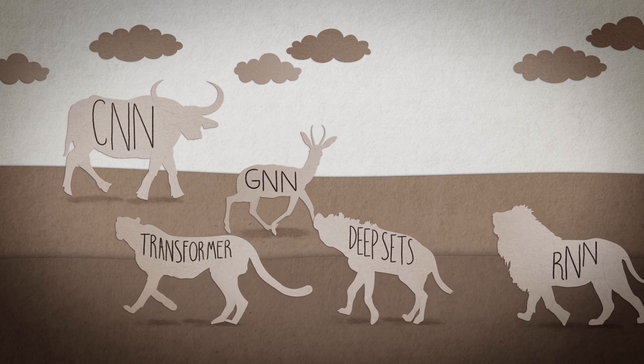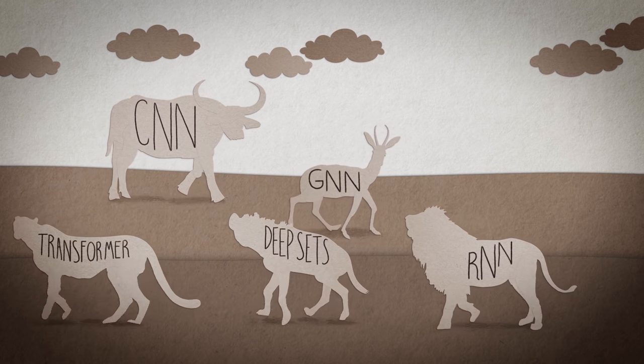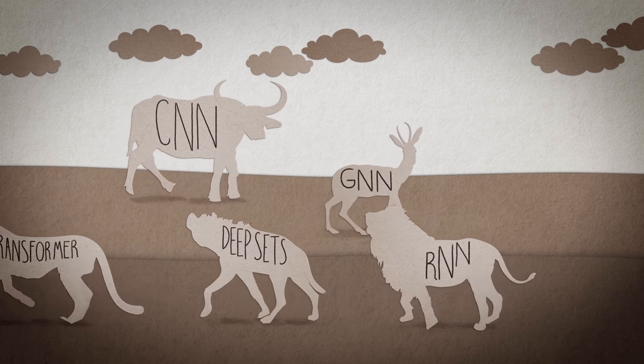As a consequence, it is difficult to understand the relations between different methods, which inevitably leads to the reinvention and rebranding of the same concepts. So we need some form of geometric unification in the spirit of the Erlangen program that I call geometric deep learning. It serves two purposes. First, to provide a common mathematical framework to derive the most successful neural network architectures, and second, to give a constructive procedure to build future architectures in a principled way.